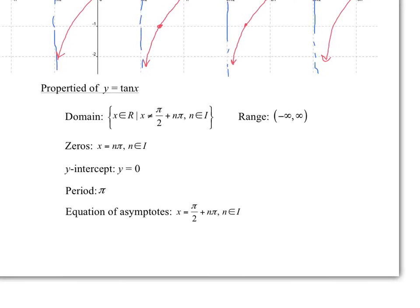Properties of tangent. The domain: notice that there are non-permissible values of x. So x is all real numbers except x is not equal to pi over 2 plus any integer multiple of pi. Notice I used n here — usually I've used k — but it's just a variable representing an integer amount of pi.